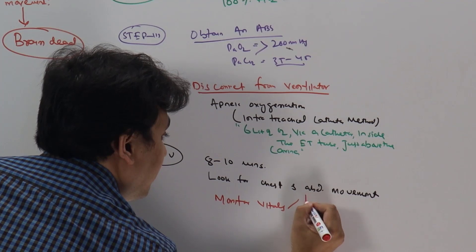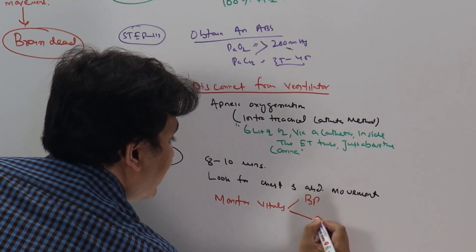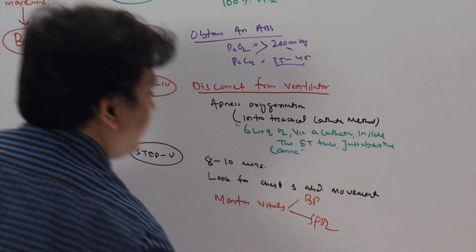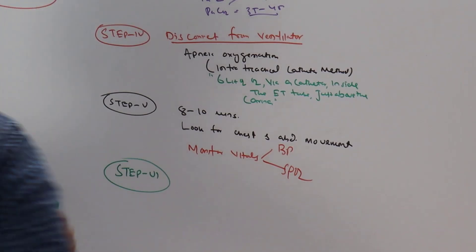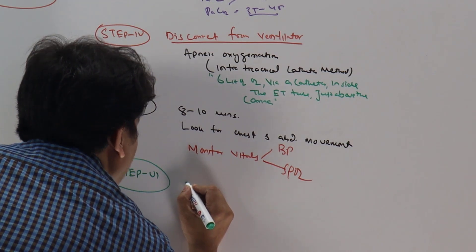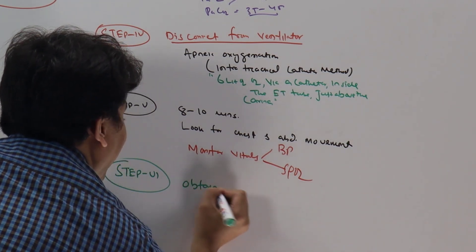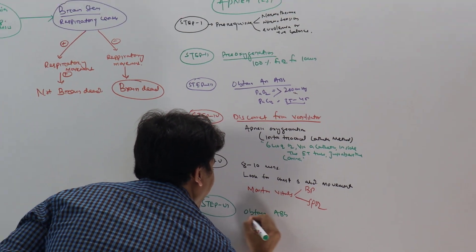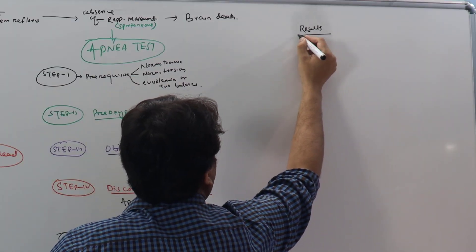Step 6: at the end of 8 to 10 minutes, again obtain an ABG. The result can be two types.